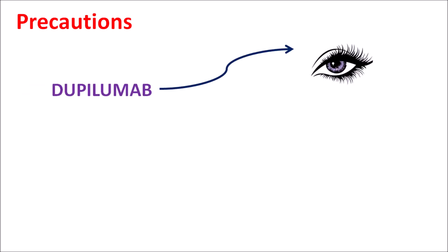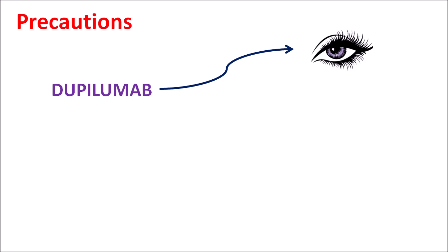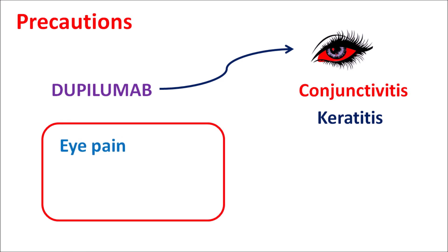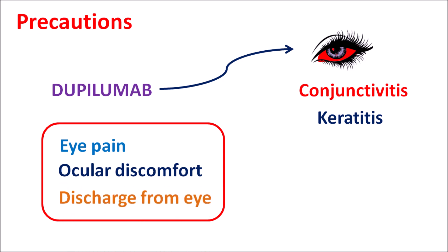Now let us discuss the precautions of this drug. One important precaution is that dupilumab can affect the eye, producing inflammation resulting in conjunctivitis and redness. It can also produce keratitis — inflammation of the corneal layer. These can cause ocular symptoms like eye pain, ocular discomfort, dryness of the eye, and discharge. If these symptoms are observed, dupilumab should be used carefully.